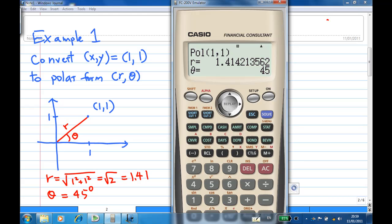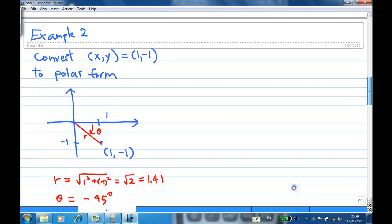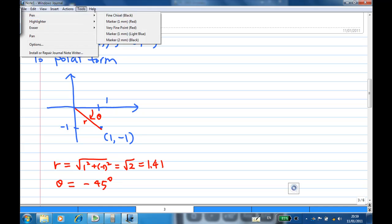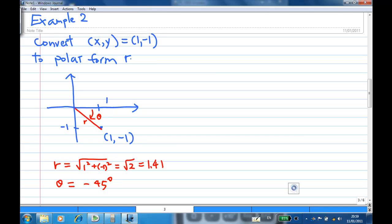Let's try to look at another example. Example 2: if the point (x,y) is (1,-1), I want to convert them to the polar form (r,θ). From the diagram, we have seen that r is equal to square root 2, θ is actually minus 45 degrees, because it is specified in the clockwise direction. Let's try to use my calculator again to convert this.